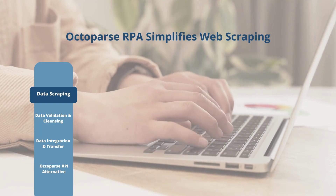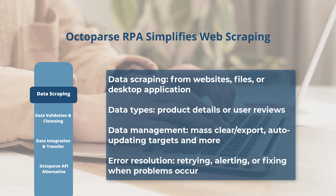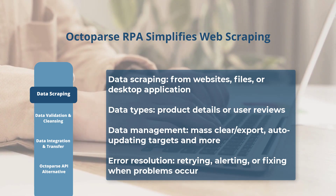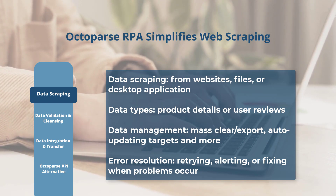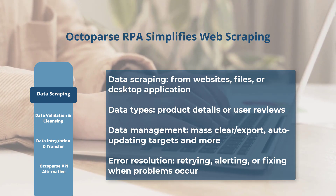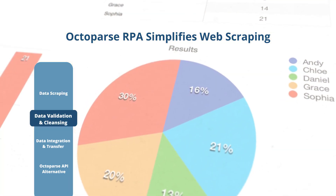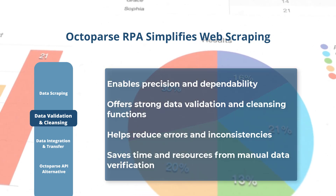Data scraping: Octoparse RPA is the go-to tool for efficient and effortless data scraping from websites, files, and even desktop apps. Specify any data type — from product details to customer reviews — and let Octoparse manage the process. Benefit from its advanced data management features like batch clear, export, auto-updating targets, and flexible data targeting. It's error-savvy too, able to retry, notify, or correct when encountering issues.